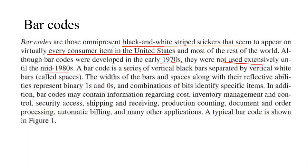A barcode is a series of vertical black bars separated by vertical white bars. The width of the bars and the spaces, along with their reflective abilities, represent binary ones and zeros, and combinations of bits identify specific items.